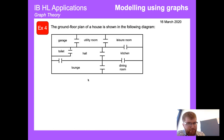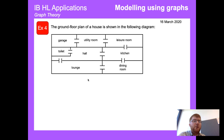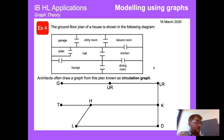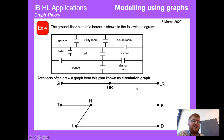Architects also use graphs all the time for designing houses and buildings. We can model a floor plan as a graph where the gaps represent doors — there's a door from the garage to the utility room, to the kitchen, to the leisure room, the hall, and the dining room. This is represented as a circulation graph, where you can see that the hall is well connected with many other nodes.